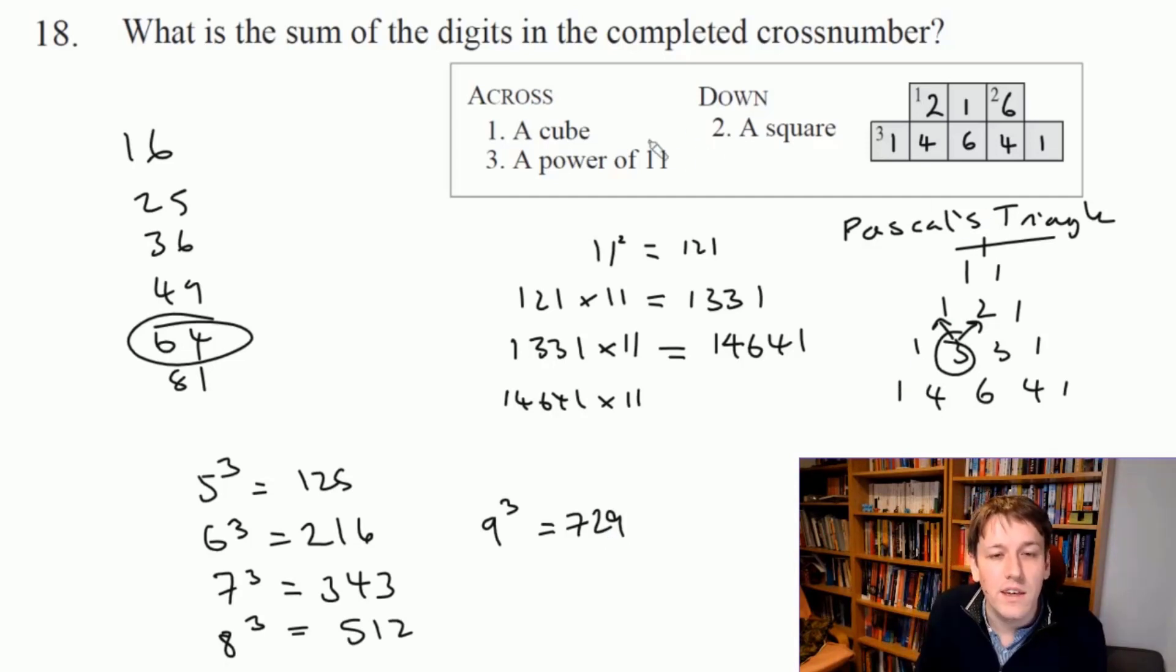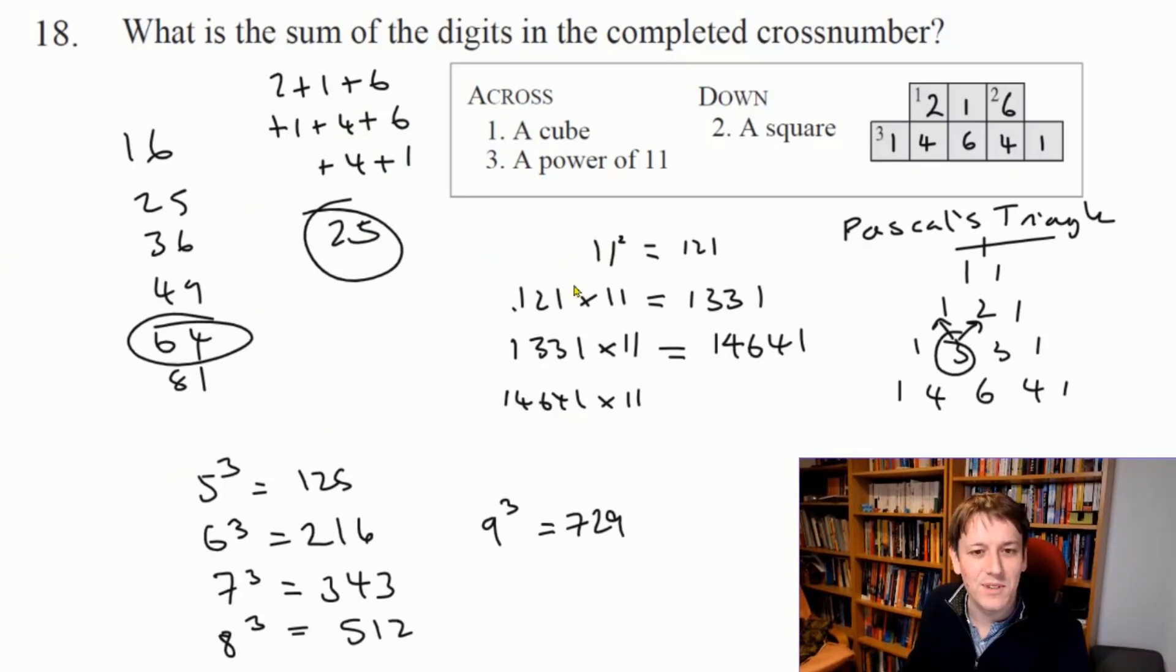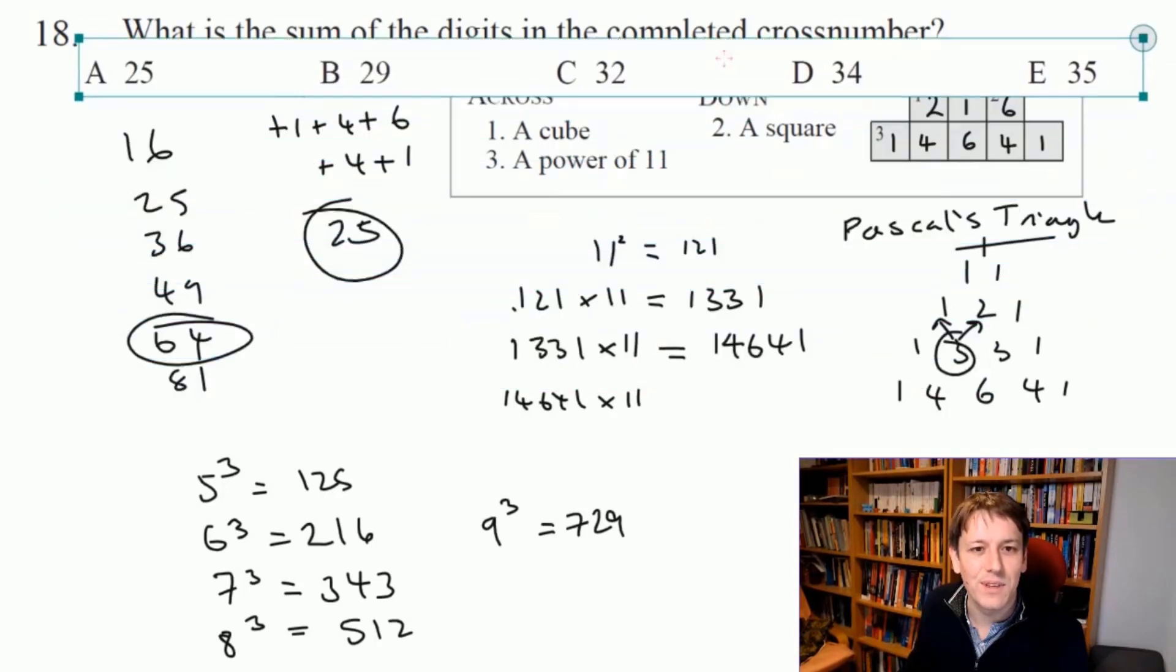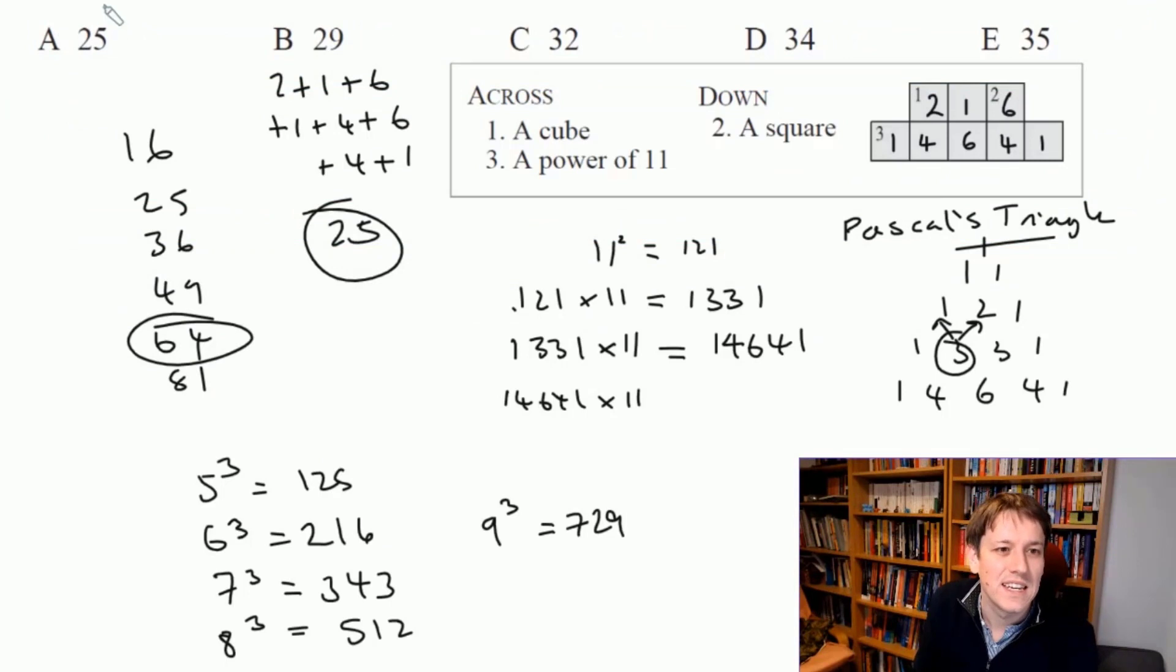Right, the answer to this question, anyway, 2 plus 1 plus 6 plus 1 plus 4 plus 6 plus 4 plus 1. So that's 9, 10, 21, 25. And so the answer is 25. Oh, and I just realized I didn't put the answers on the screen here, actually. So here are the options. Anyway, 25 is one of the options here. And so the answer is A.